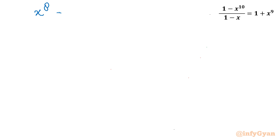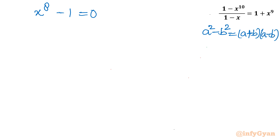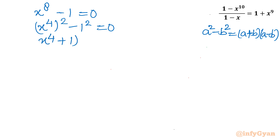This is an octic equation: x^8 - 1 = 0. We apply the difference of two squares formula a² - b² = (a+b)(a-b). Writing it as (x^4)² - 1² = 0, we get (x^4 + 1)(x^4 - 1) = 0. Then applying the formula again to x^4 - 1 gives (x^4 + 1)(x² + 1)(x² - 1) = 0... wait, let me write (x^2)² - 1² = 0 for the second factor.